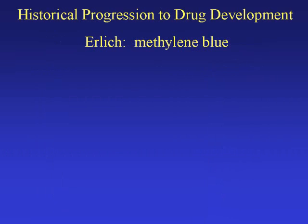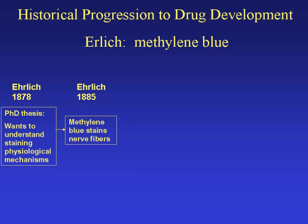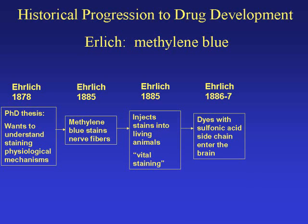We'll try to summarize more than a decade of research by Ehrlich into just a couple of slides. In the late 1870s, Ehrlich wanted to try to understand the physiological mechanisms of staining as part of his PhD. He noticed that methylene blue stains nerve fibers. By 1885, Ehrlich was injecting stains into living animals — not just post-mortem. This so-called vital staining he felt would increase the quality of stains and allow him to better understand the physiological mechanisms associated with staining.